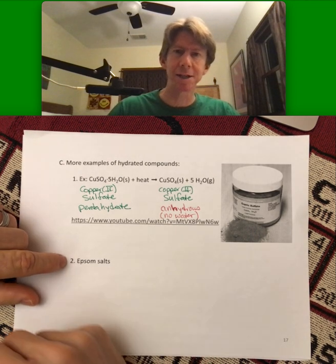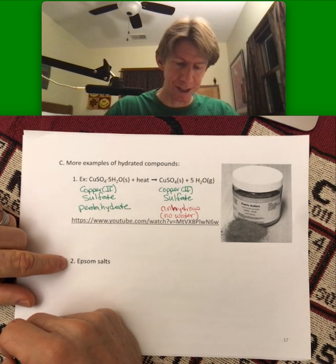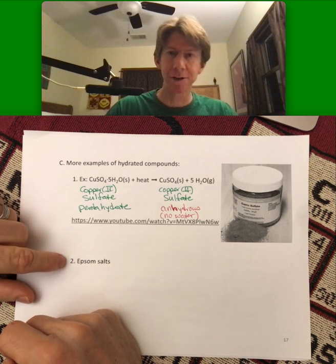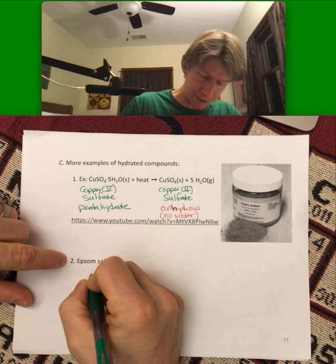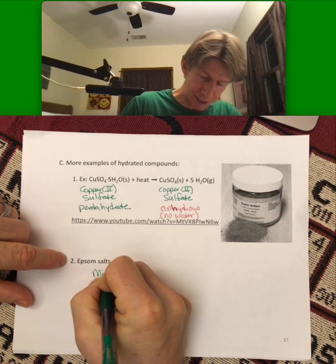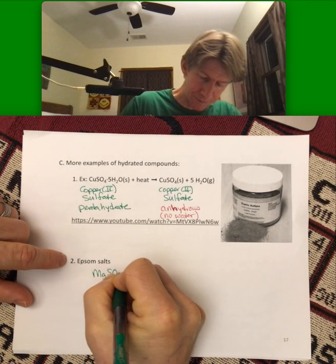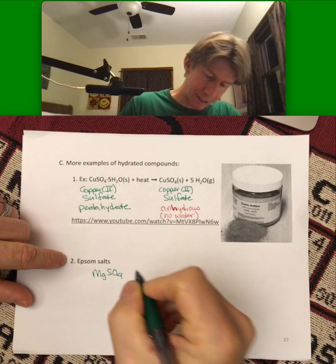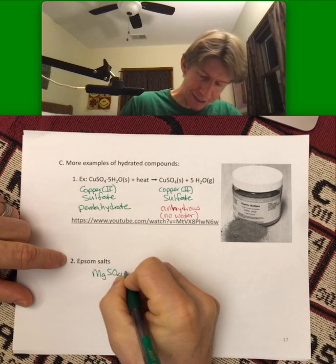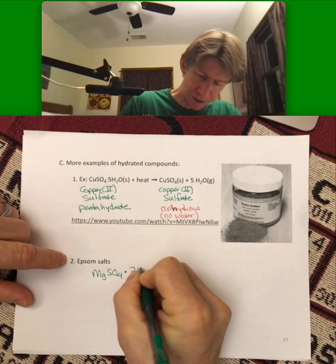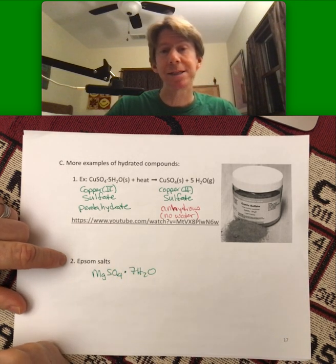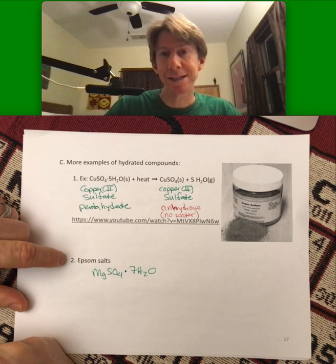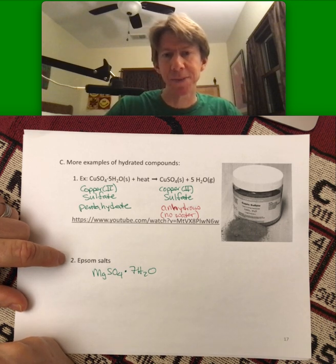Epsom salts — another common material — is MgSO4·7H2O. Its name would be magnesium sulfate heptahydrate. Please write that down.